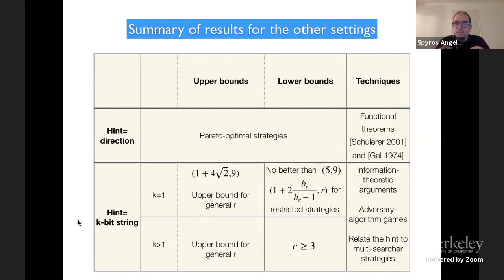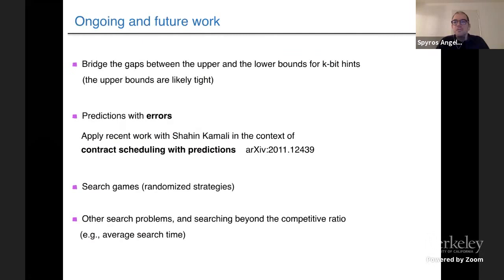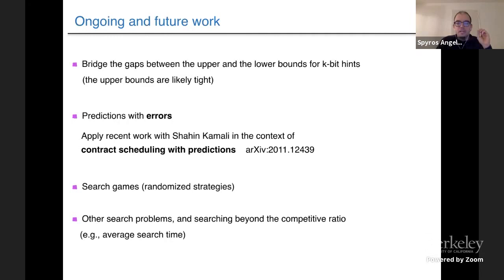We try to relate the hint to multi-search strategies: we pretend there are many searchers searching simultaneously, all being robust, and let the best one locate the target. To conclude with ongoing and future work: this is a simple setting but the analysis is not trivial. There are still upper and lower bound gaps we are working to bridge. Another interesting direction is incorporating errors in predictions, because in the real world predictions come with some errors. We looked at the problem of contract scheduling with predictions, which will appear at the next AAAI conference, and we are confident these ideas can be incorporated. We would also like to study randomized strategies and search problems beyond the competitive ratio — studied as a search game between hider and searcher, or as an optimization problem with a distribution over hider locations. Thank you very much.